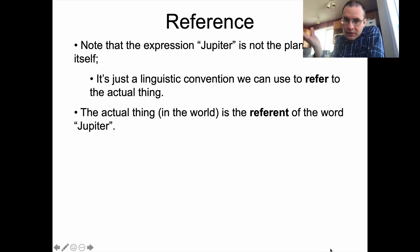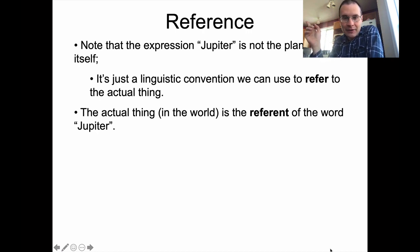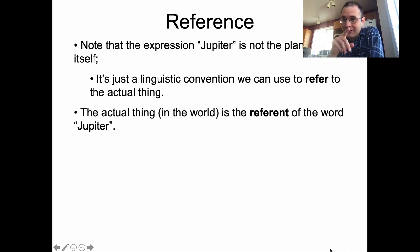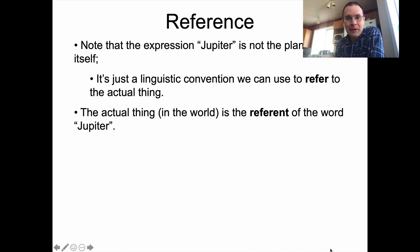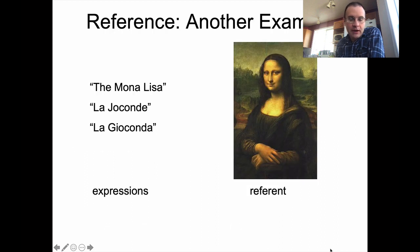So when I talk about Jupiter, or I talk about the biggest planet in the solar system, I pick out some specific thing out there in space. You can see it right now in the morning sky, right before sunrise — that's Jupiter. But the actual expressions I use are just referring expressions rather than the referent themselves.